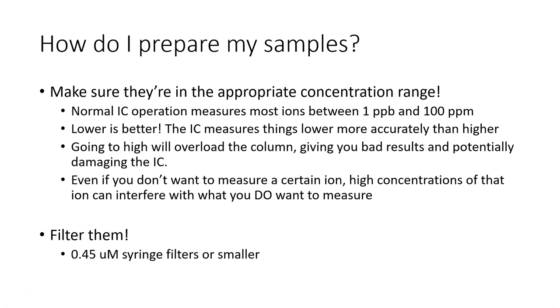The first thing you want to do is make sure that they are in the appropriate concentration range. Normally the IC measures most ions between one part per billion and a hundred parts per million. In general you want to go lower—lower is better. The IC measures things lower more accurately than it does higher. In addition to that, going too high is going to overload the column, give you bad results, and potentially damage the IC.